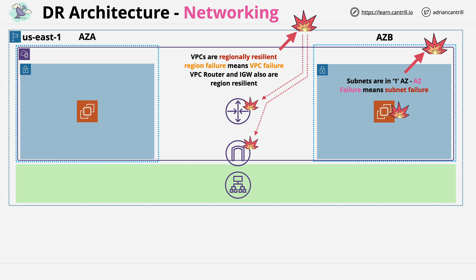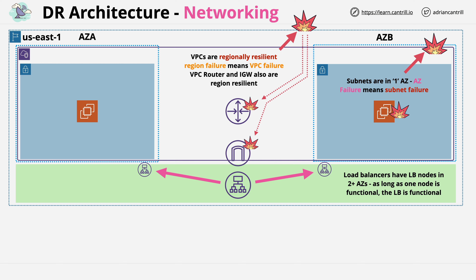The way we get around this from a local regional perspective — how we build high availability into applications — is by using an Elastic Load Balancer. Elastic load balancers are regional services, and they work by deploying nodes into specific subnets in each availability zone you select while provisioning a load balancer. These nodes direct any incoming connections through to instances or compute services running inside multiple subnets and as such inside multiple availability zones. If an availability zone fails, any other working availability zones can continue meeting user demand.